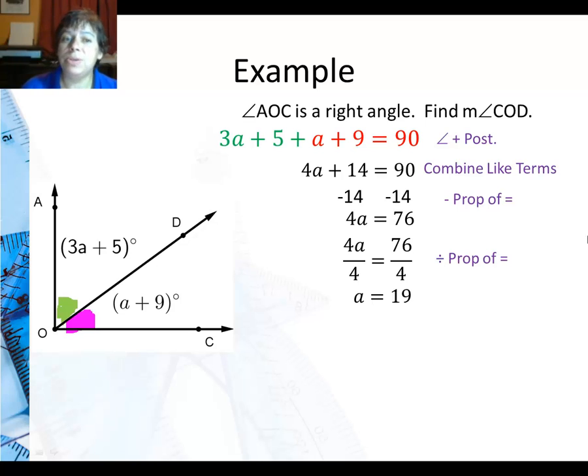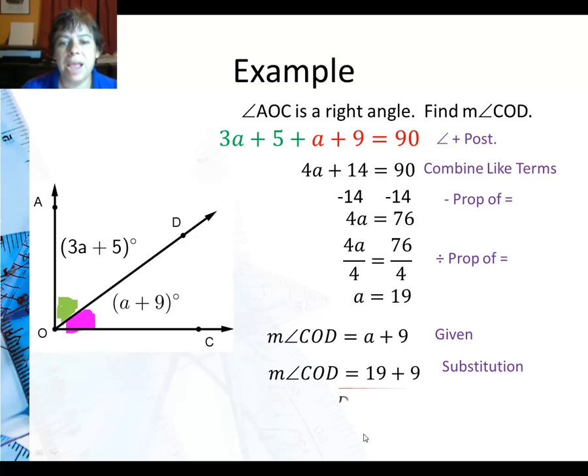Now, did I find what I was looking for? Well, if you look here, I'm trying to find angle COD. So I need to go ahead. This is what was given to me. Angle COD is A plus 9. And then I substitute in 19 for A, and I get 28 degrees. So angle COD is 28 degrees.